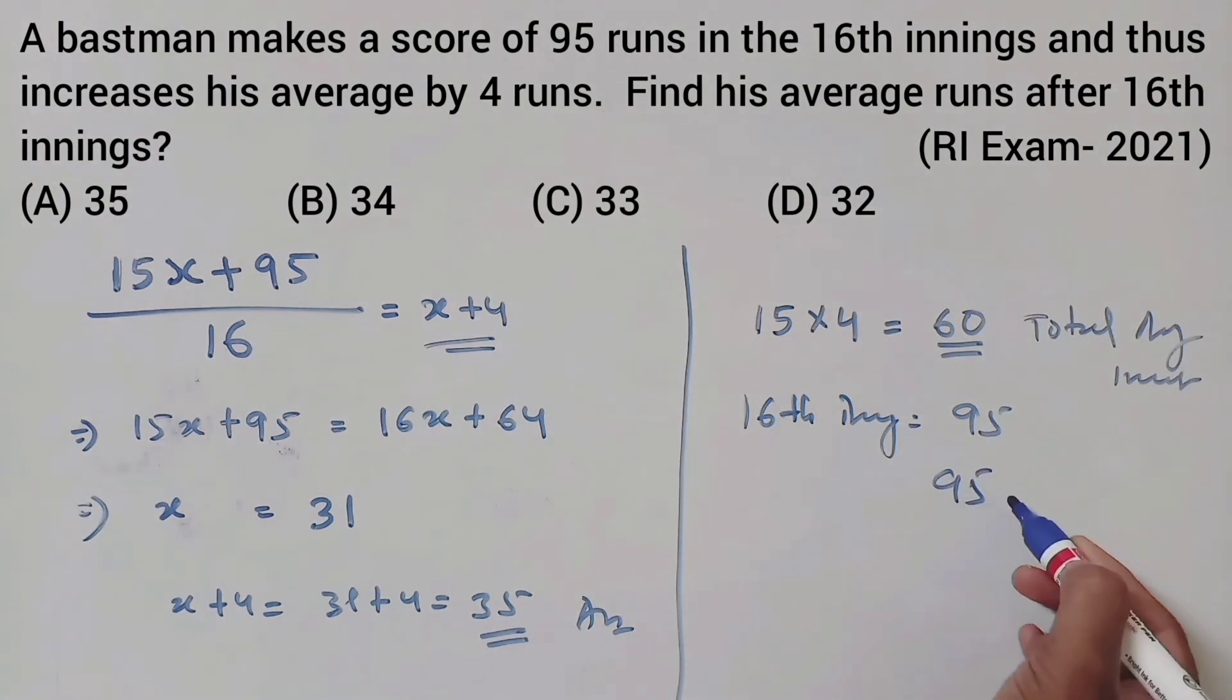95 minus 60 equals 35. This is the answer. The average after 16th innings is 35.